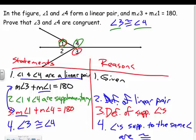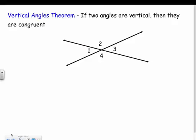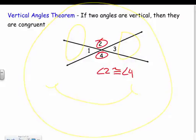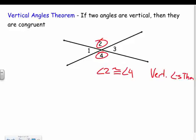Just keep getting practice with these proofs. We also have the vertical angles theorem: if two angles are vertical, they're congruent. For example, angles two and four would be congruent because they are vertical. The reasoning in a proof would be the vertical angles theorem.